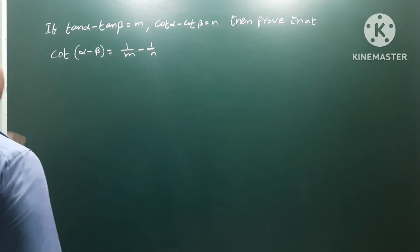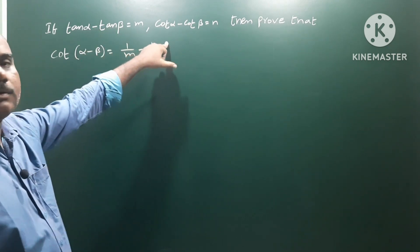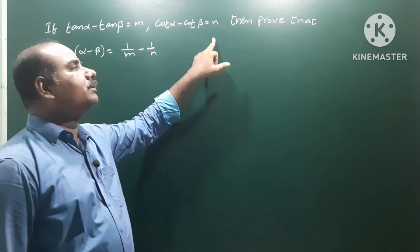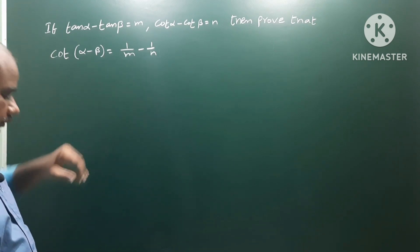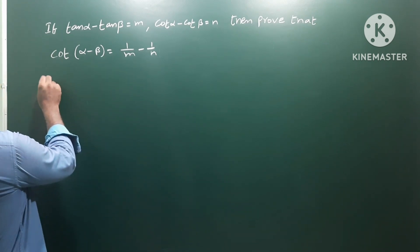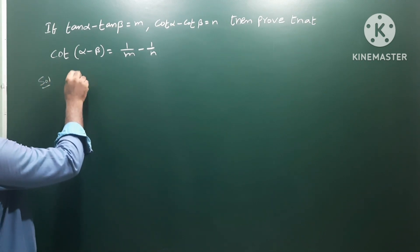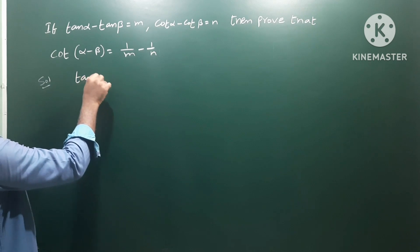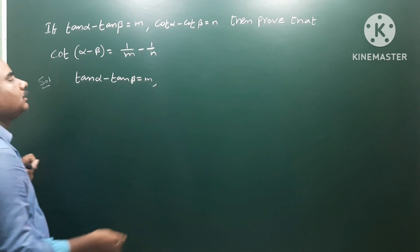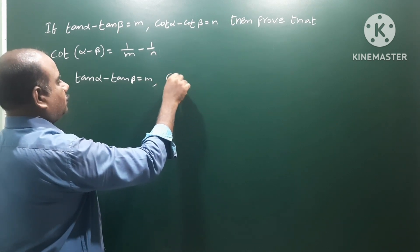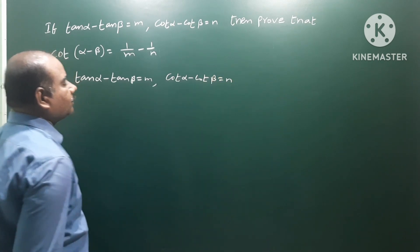If tan alpha minus tan beta is equal to m, and cot alpha minus cot beta is equal to n, then prove that cot alpha minus beta is equal to 1 by m minus 1 by n. Given values: tan alpha minus tan beta equals m, and cot alpha minus cot beta equals n.